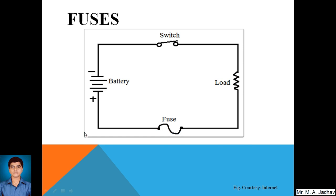If the current exceeds the safe value, the fuse connected in series with the load will melt — it is made of a material that, due to higher current, gets heated to its melting point, gets fused, and the circuit opens. There will be no contact between the two points, no flow of current or voltage, and the load connected in the circuit gets protected. Another important point: the fuse is always connected in series with the load, and always on the positive side of the connection.